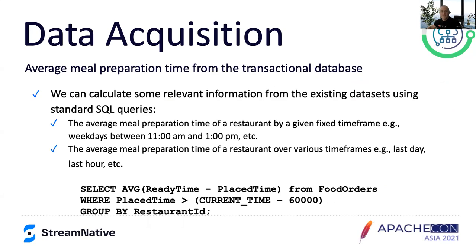Looking at that transactional database, we can come up with some interesting metrics right out of the gate. We can calculate things like the average meal preparation time — by running a query to identify the average difference between the ready time and the placed time for food orders by restaurant ID, over certain fixed time frames. For example, what's their average time on Wednesdays between 11 a.m. and 1 p.m.? Or more recent data, like what are they doing in the last hour — based on volume, are they increasing the time it takes to prepare an order?